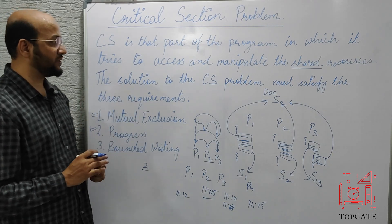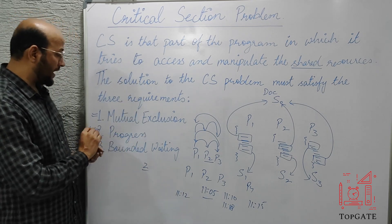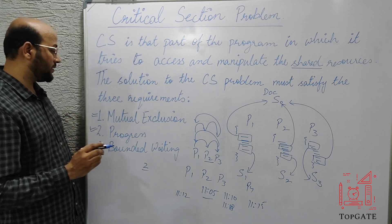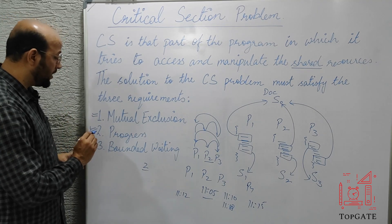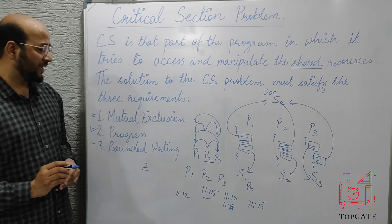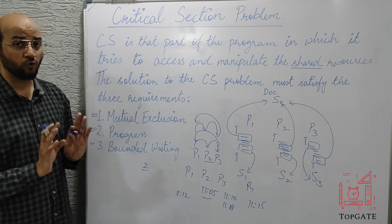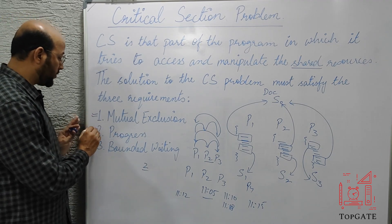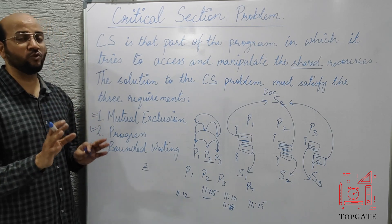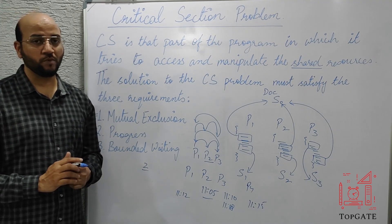That is the main story of the critical section and the critical section problem. There are three requirements: mutual exclusion, progress, and bounded waiting. The first two — mutual exclusion and progress — are mandatory requirements, and any solution must contain both. The third one, bounded waiting, is optional — if it is met, it is good; if not, there is no problem. Without the first two mandatory requirements, the solution to the critical section problem is not complete or correct. Thank you so much.